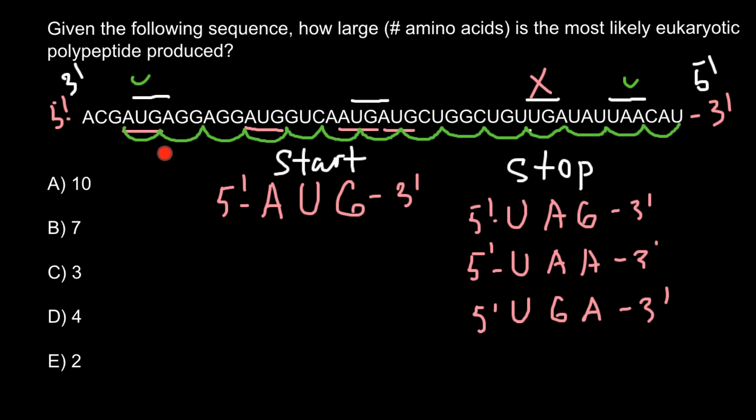This would be our choice, the sequence that would code for the polypeptide. Now let's count how many polypeptides we have here. We do count start codon because it codes for methionine: first, second, third, fourth, fifth, sixth, seventh, eighth, ninth, tenth. We do not count stop codon because it doesn't code for any amino acid. Our polypeptide chain would be ten amino acids long, and this is answer A.